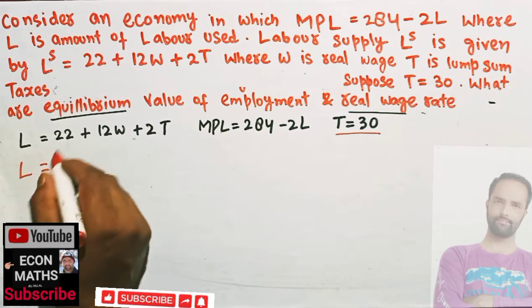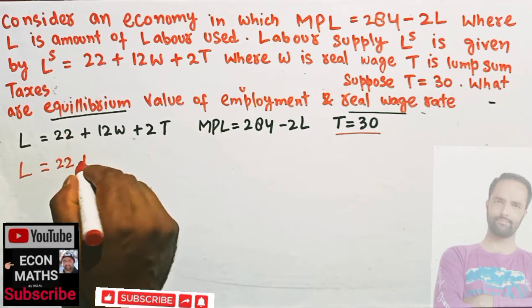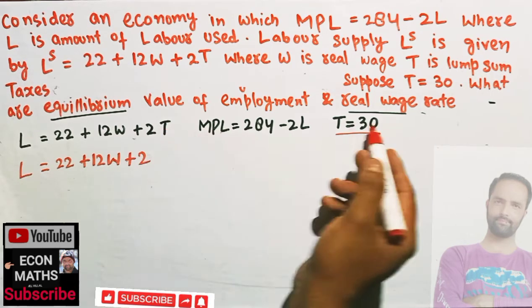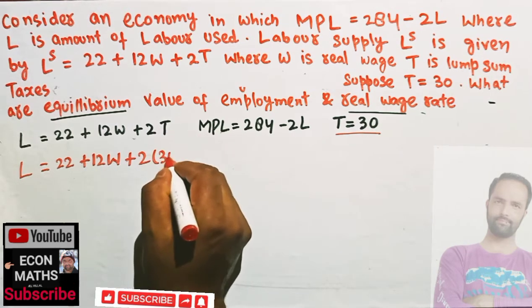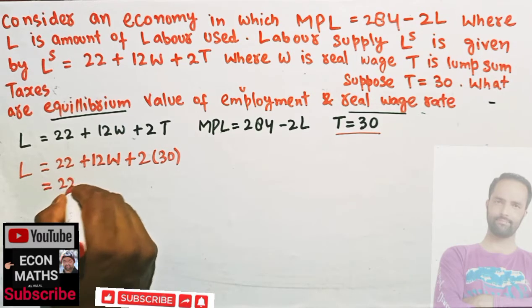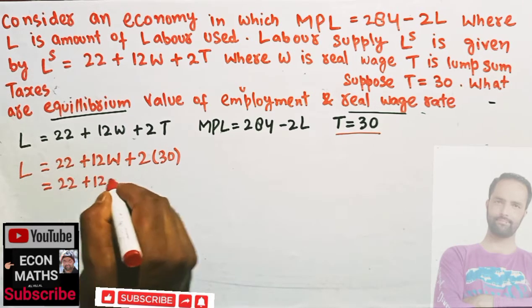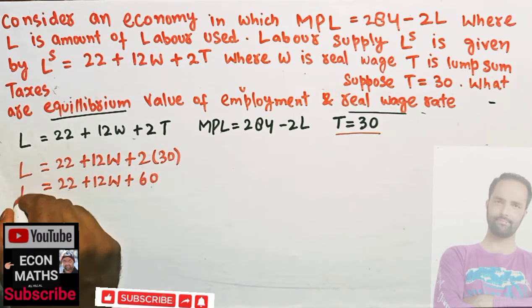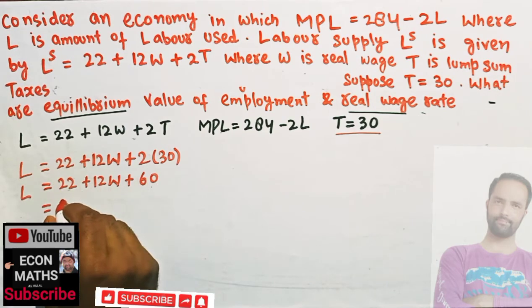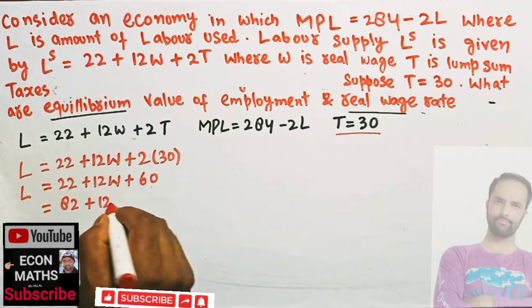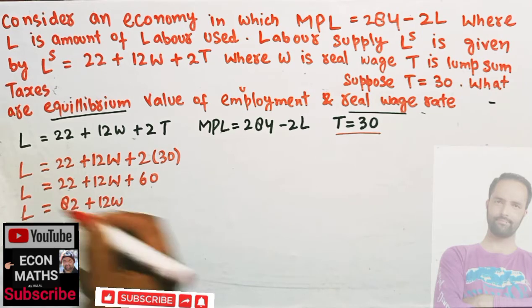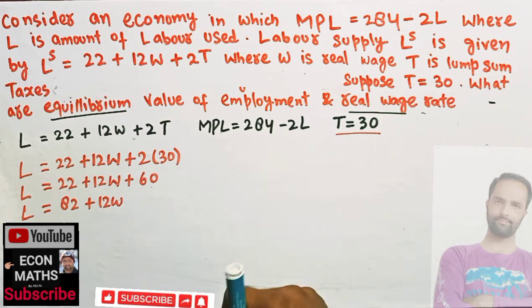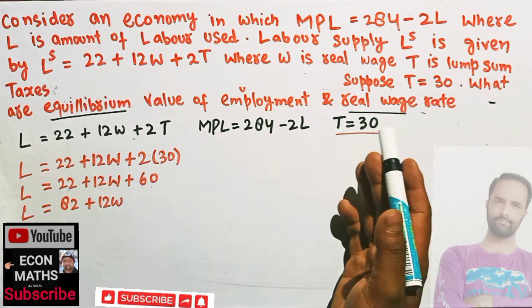Since T equals 30, our labor supply becomes 22 plus 12W plus 2 times 30. That gives us 22 plus 12W plus 60, which simplifies to 82 plus 12W. This is our labor supply equation.